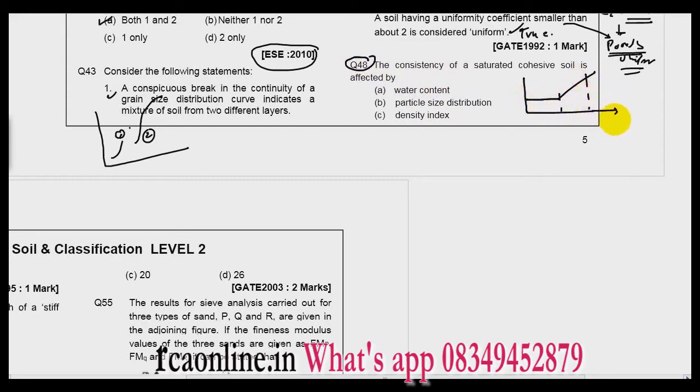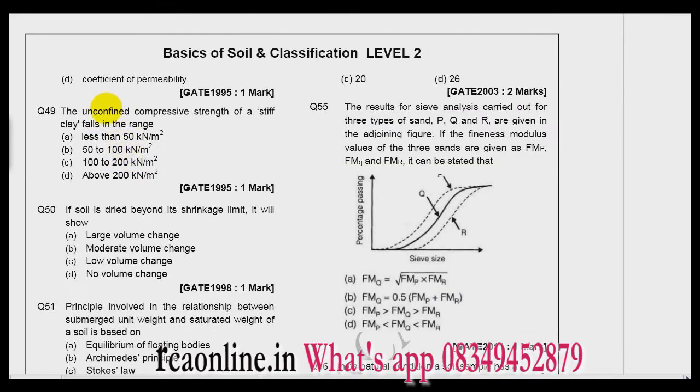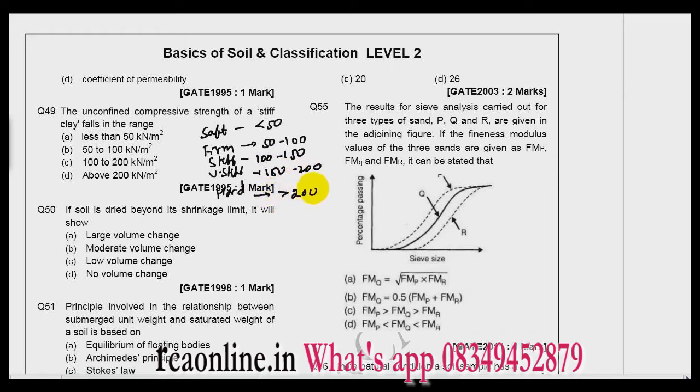Now question number 49: The unconfined compressive strength of a stiff clay falls in the range. It is a tough question. You have to remember the type of soil. So if the soil is soft, firm, stiff, very stiff, and hard, and its unconfined compressive strength: less than 50, firm 50 to 100, stiff 100 to 150, very stiff 150 to 200, and hard greater than 200. This you have to remember. So a stiff clay is 100 to 150. It is not given, but we will take this as the option, so C is right.